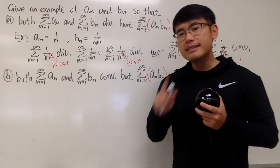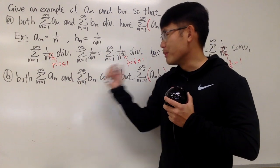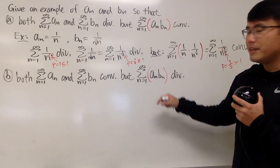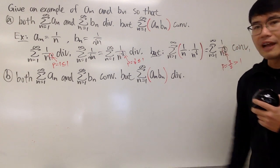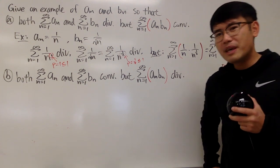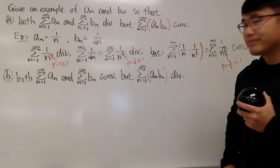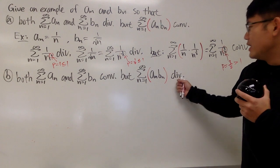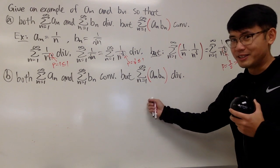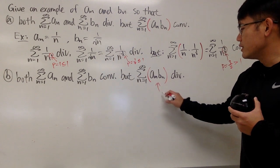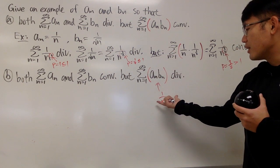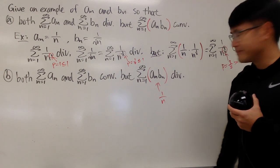Now we want aₙ and bₙ so that the series of aₙ and the series of bₙ both converge, but we want the series from N=1 to infinity of aₙ times bₙ to diverge. It's kind of a reverse of that. The prime example of a divergent series is the sum of 1 over N. So if you can somehow produce aₙ times bₙ to equal 1 over N, then you'll be done.